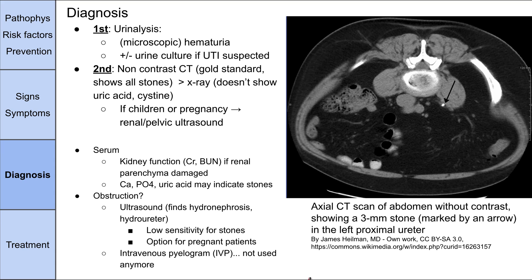Now let's look at how to diagnose kidney stones. The first test is urinalysis — the vast majority of patients with kidney stones will have hematuria, possibly microscopic. You can reflex to a urine culture if you suspect a UTI based on leukocyte esterase and nitrites. The next test is a non-contrast CT, which is the gold standard for imaging all stones. All types of stones will be visible, as shown in this example where you can see a three millimeter stone in the ureter.